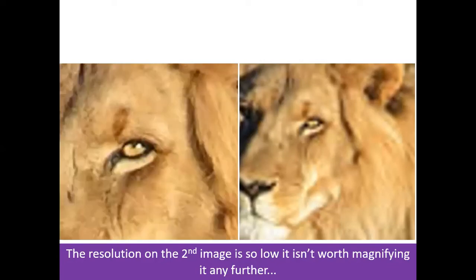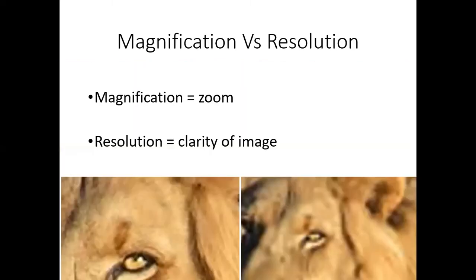If we zoom in even further, you can now see that the image on the left is starting to look fuzzy. It doesn't have a good enough resolution to keep going past this point. The resolution is about clarity of image, whereas magnification is about the zoom.